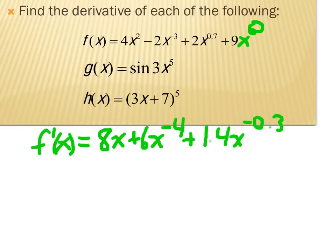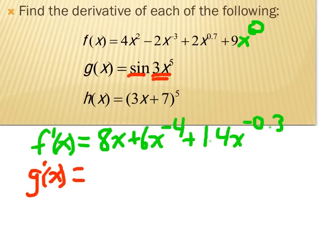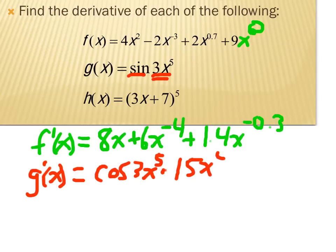For the second problem, g of x is a chain rule problem — there's an outside function and an inside function. The chain rule says: derivative of the outside with respect to the inside, times the derivative of the inside. The sine function is the outside, so its derivative is cosine of 3x to the fifth. Then multiply by the derivative of the inside, which is 15x to the fourth.